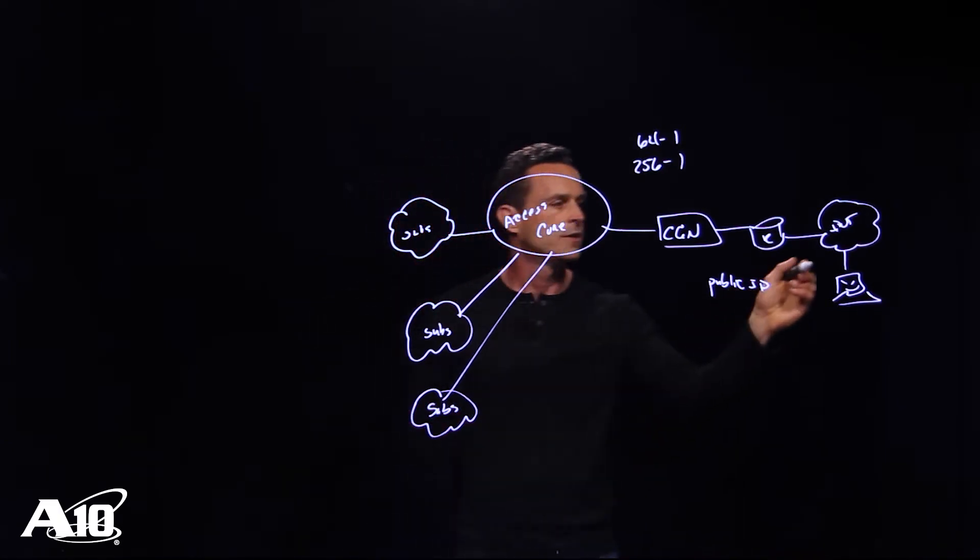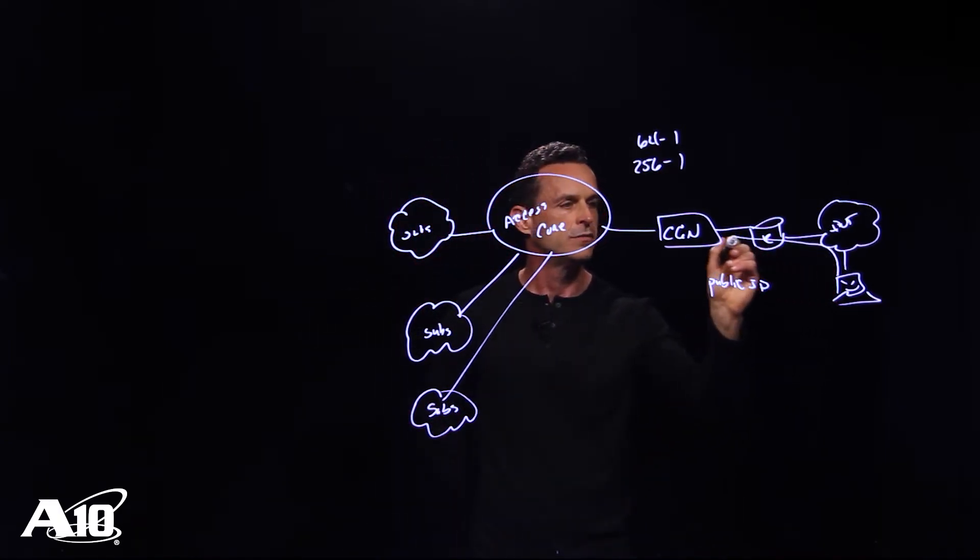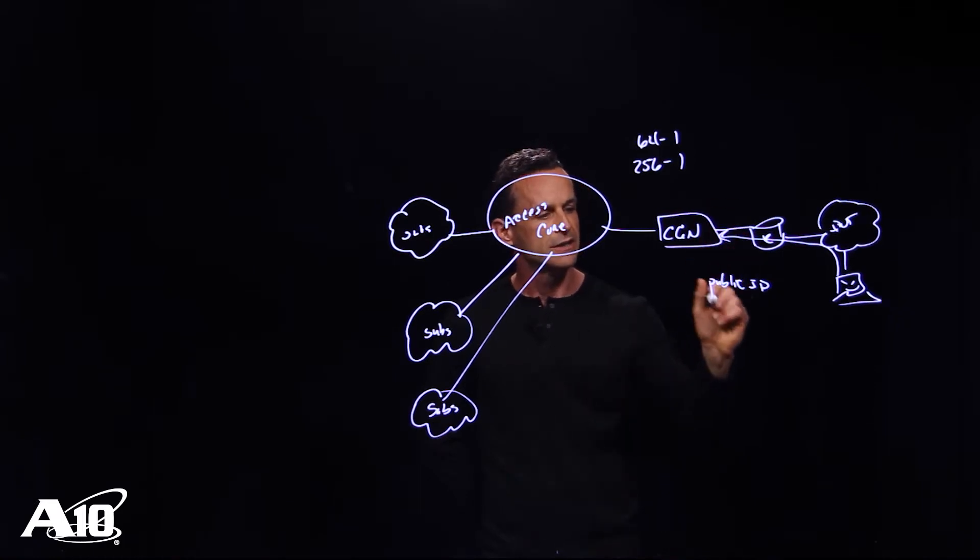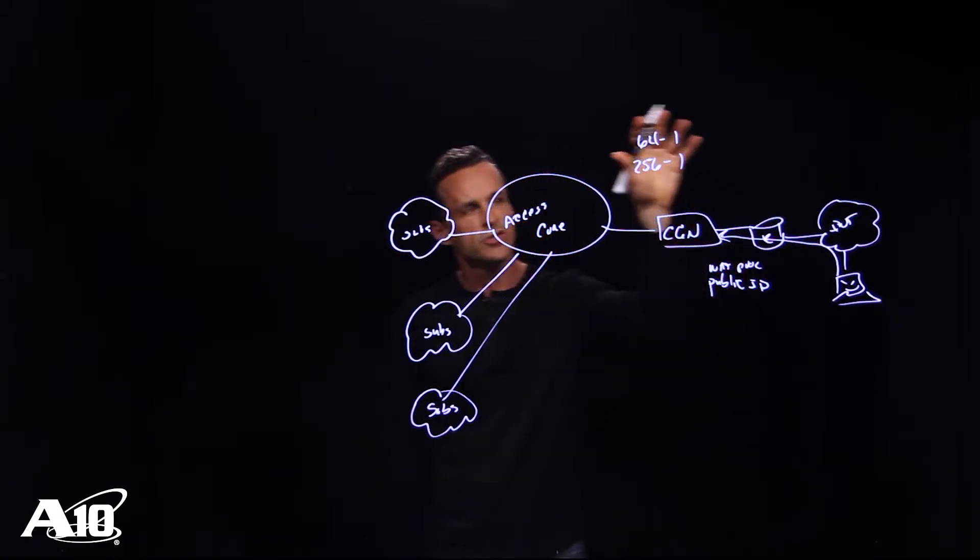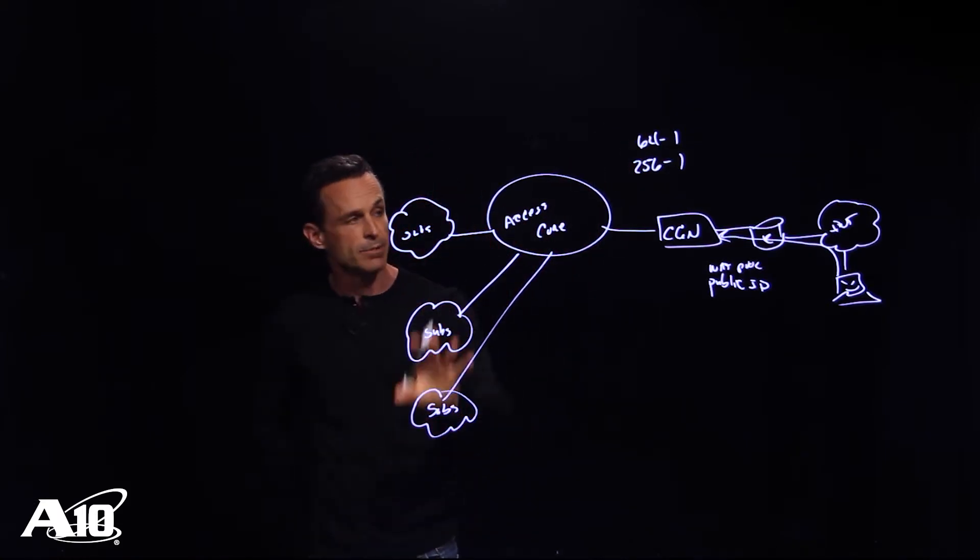So these particular volumetric attacks that are coming into the carrier grade NAT device that are targeting our NAT pool will have the effect on the subscribers of actually distributing and amplifying the attack across multiple users. So that's the first problem.